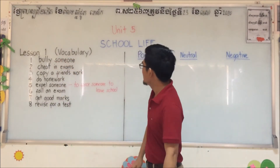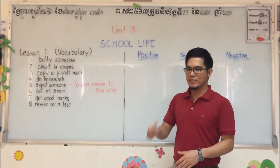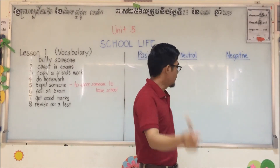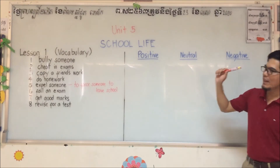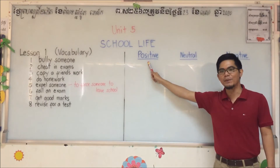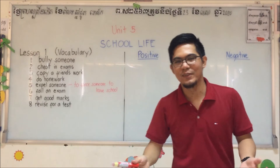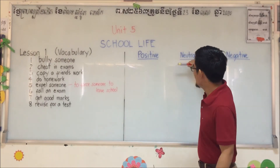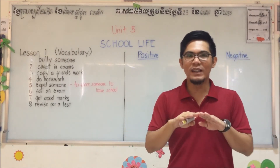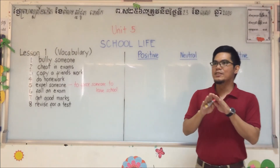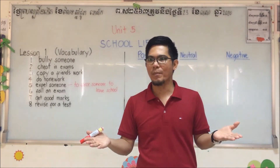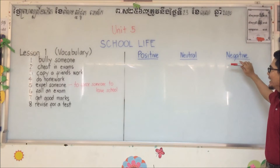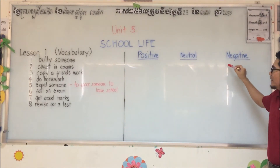Now, what will we do with these eight school life verbs? We will identify if each verb is positive — meaning favorable — neutral, meaning normal, like normal student actions and normal classroom tasks — or negative, meaning bad actions. We need to write each verb under positive, neutral, or negative.